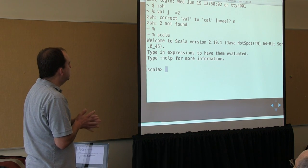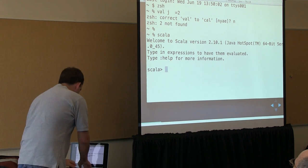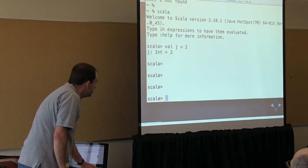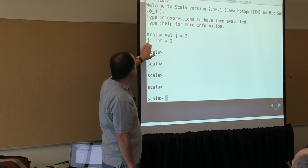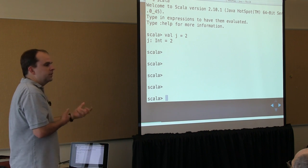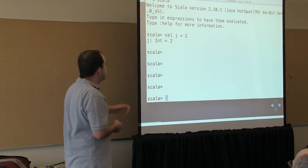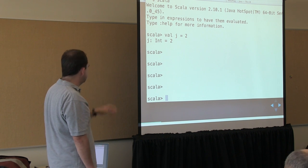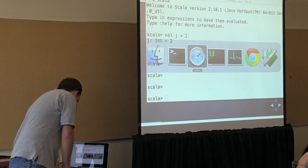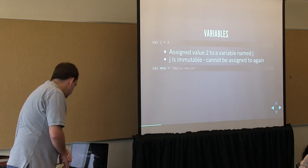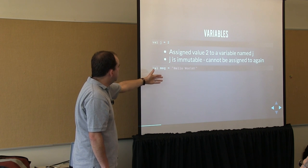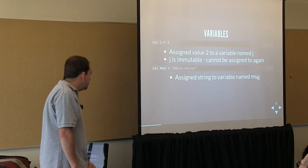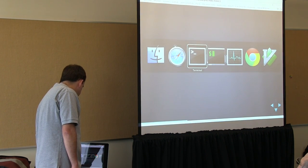Now I'm in the REPL. I typed Scala and it says welcome to Scala version 2.10. I type in what I had on the slide, and the REPL shows that we defined a variable of type Int with value 2 — there you see type inference in action. Everything in Scala is typed, so there's always going to be something displayed for a type. The same thing applies for a string — we can assign a literal string value and it will get typed to String.